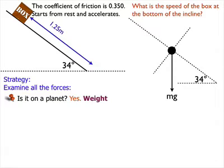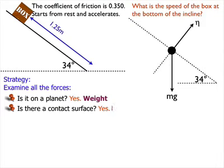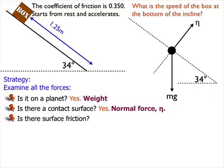Next question, is there a contact surface? Yes, the box is on the surface. So therefore I've got a normal force, which is normal to the incline. Next question, is there surface friction? Yes, it tells me the coefficient of friction. So I have surface friction. That's parallel to the surface and opposite the direction of motion, so that's up the incline. There's my cursive F showing the friction.